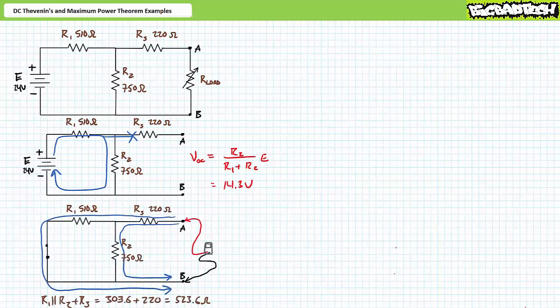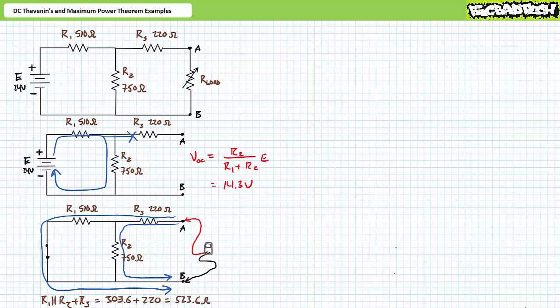Let's move on to solving for RTH, the Thevenin's equivalent resistor. Solving for RTH also necessitates removal of the load resistor. Additionally, one must remove the sources: a voltage source is replaced with a short, a current source is replaced with an open. One then determines the resistance of the modified circuit at the terminals of interest. Note that RTH is not the resistance seen by the original source — it is the resistance seen by the load resistor when the source has been removed. Incorporating shorts and opens may fundamentally alter the nature of the original series-parallel circuit. Here, an ohmmeter at the terminals of interest sees R3 in series with a parallel combination of R1 and R2, presenting a resistance of roughly 523.6 ohms. This is our Thevenin's equivalent resistor, RTH.